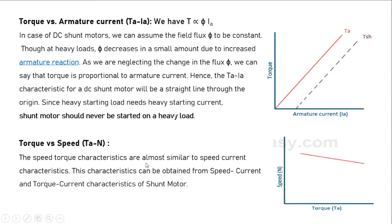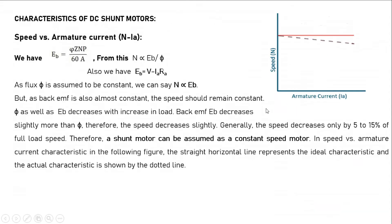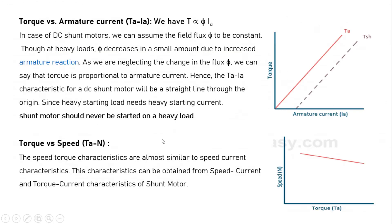For torque versus speed characteristics of the shunt motor, this characteristic is obtained by combining the speed-current and torque-current characteristics. Since torque is directly proportional to Ia and speed is nearly constant, the speed-torque characteristic is nearly a straight horizontal line, showing that the shunt motor maintains nearly constant speed over a range of torques.